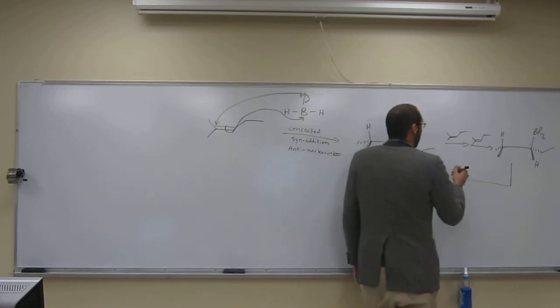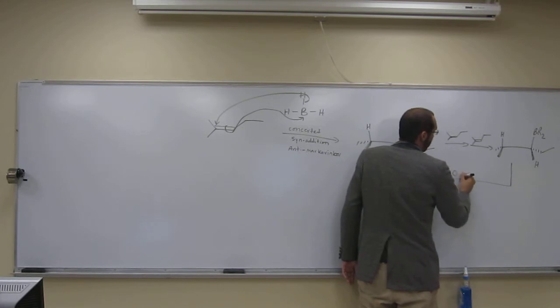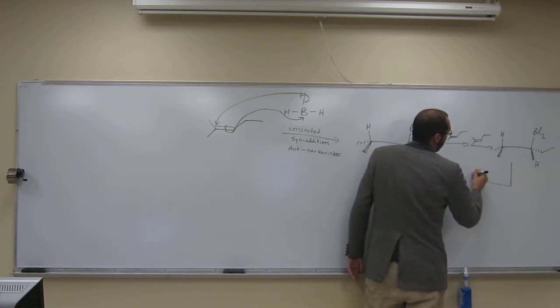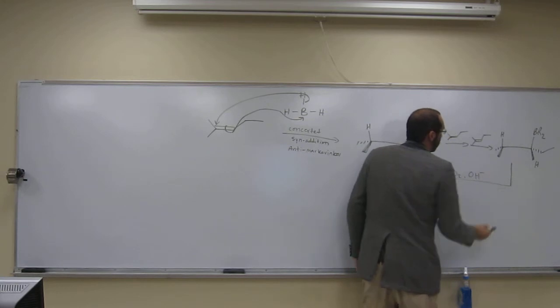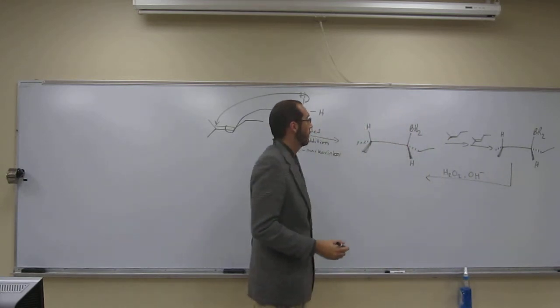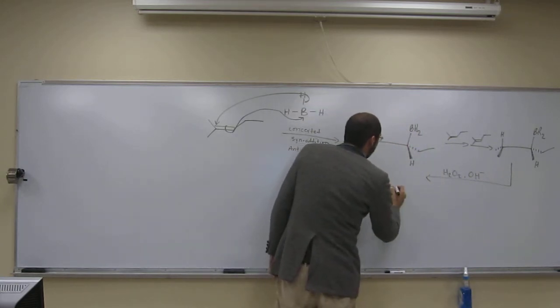So you get an alcohol. So the second step, you just need to know the conditions: hydrogen peroxide and hydroxide ions, so strong basic conditions. And that's going to give you the final product.